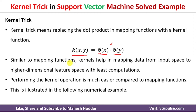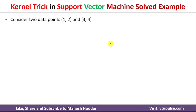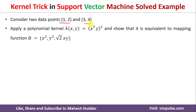We will take a simple example to understand why the kernel trick requires less computation compared to the dot product between mapping functions. Let's say we have two data points: (1, 2) and (3, 4). We will apply the polynomial kernel k(x, y) = (x^T y)², also known as the quadratic kernel, and show it is equivalent to the mapping function φ(x) = (x², y², √2·xy).